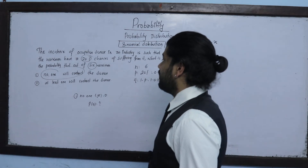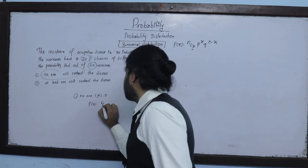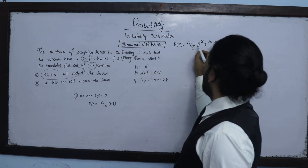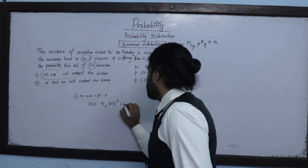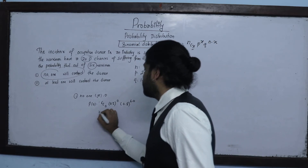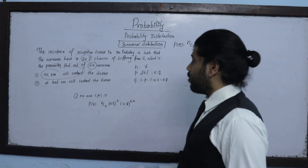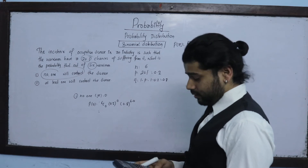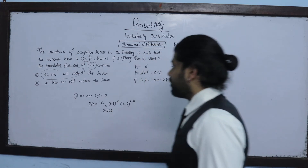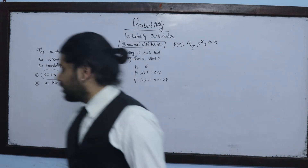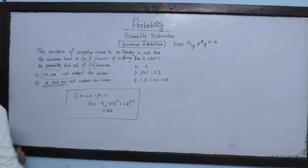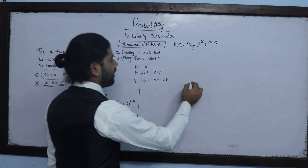No one will contract the disease — we are looking for P(X = 0). We are looking for X equals zero. The result is 0.8 to the power 6, which gives 0.262. At least one will contract the disease — at least one.